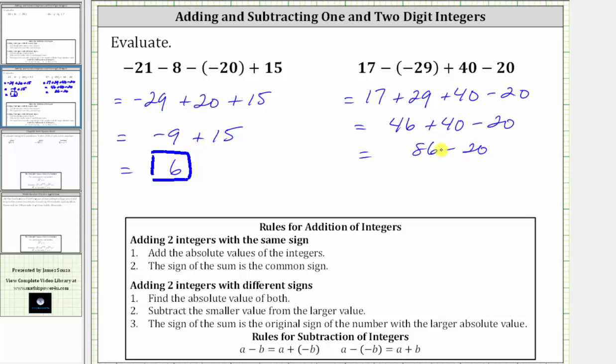And again, nothing special needed here. 86 minus 20 is equal to 66. The given expression is equal to 66. I hope you found this helpful.